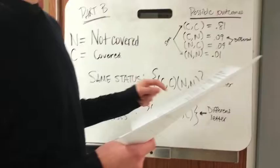And for the same, you'll do 0.81 plus 0.01, and you get 0.82.